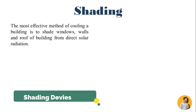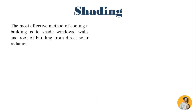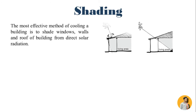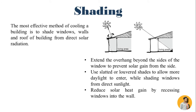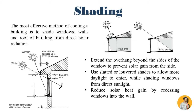The most effective method of cooling a building is to shade windows, walls, and roof from direct solar radiation. Extend the overhang beyond the sides of the window to prevent solar gain from the side. Use sloped or low-yard shade to allow more daylight to enter while shielding windows from direct sunlight. Reduce solar heat gain by recessing windows into the wall.